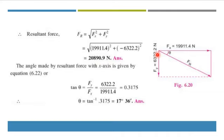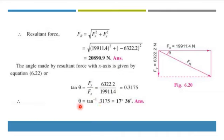The angle made by the resultant force with the x-axis is calculated using tanθ = Fy/Fx. Taking the inverse tangent of this value, θ comes out to be 17 degrees and 36 minutes.